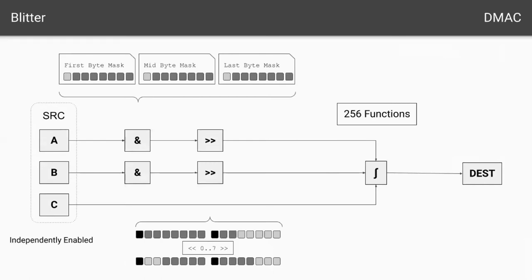Let's move on to the blitter. The blitter is a fairly complicated device, so this will be a whirlwind tour. On the Amiga and in my design, it allows three sources and one destination. You can see here on the left there are three input sources and on the right one output — that's essentially four DMA channels: three input, one output. Each source can be independently enabled or disabled, so if you don't need three you can use only one or two.